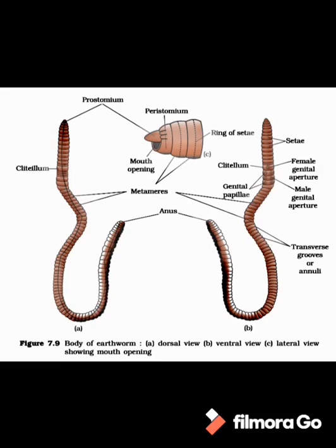All over the body of earthworm, the external openings of the excretory system, i.e., nephridiopores, are present. The earthworm body wall consists of four layers: the external-most cuticle; inner to cuticle, epidermis made up of a single layer of columnar epithelium; inner to this a muscular layer consisting of circular as well as longitudinal muscles; and the innermost coelomic epithelium, which encircles the coelom.